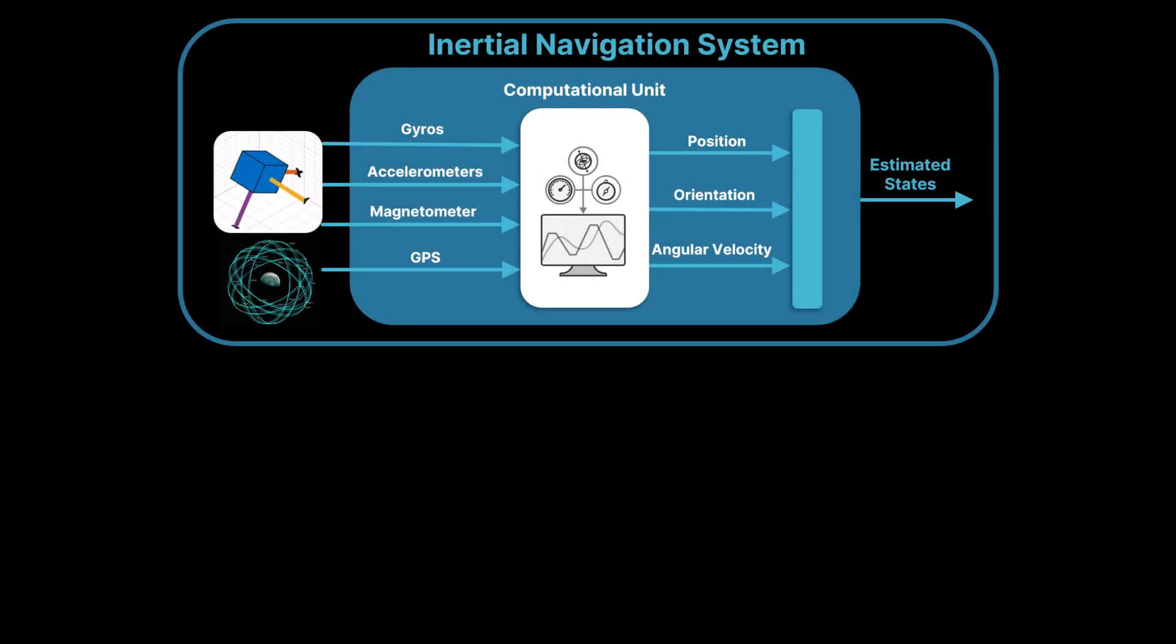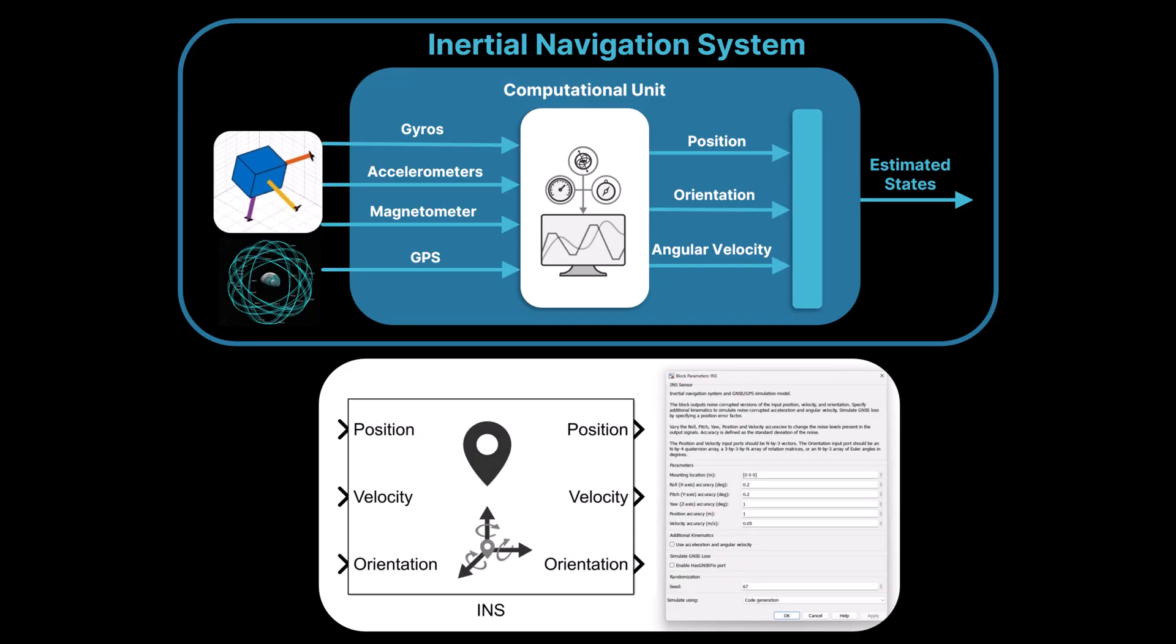The inertial navigation system INS integrates data from the IMU, accelerometers, gyroscopes and magnetometers, to estimate the vehicle's position, velocity and orientation. The INS typically uses GPS data as well to correct for drift and improve the accuracy of the position estimates. In Simulink, the INS model outputs noise-corrupted position, velocity and orientation based on the corresponding inputs.